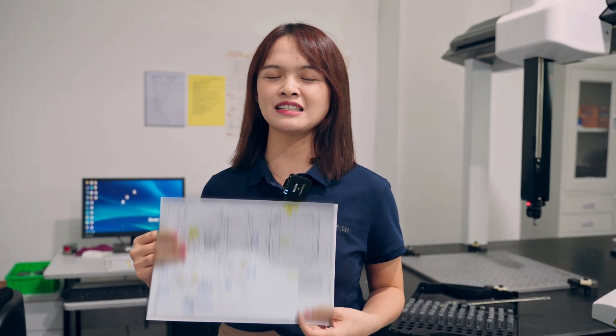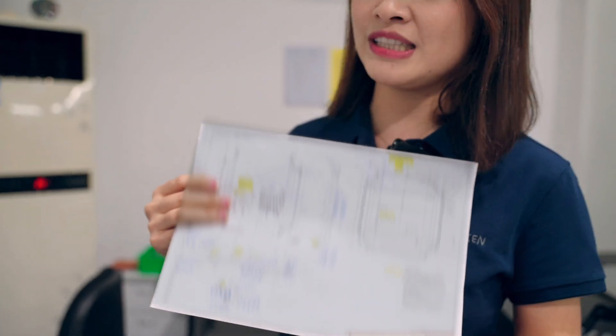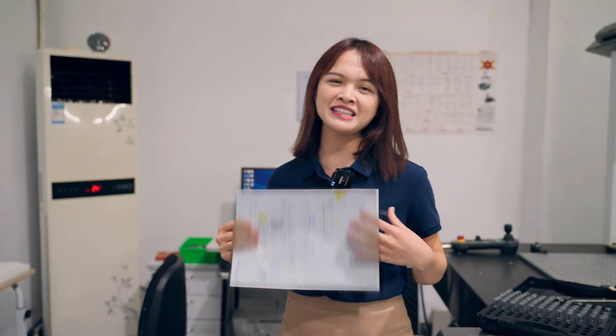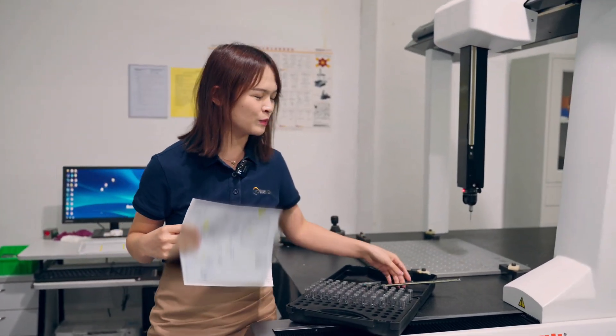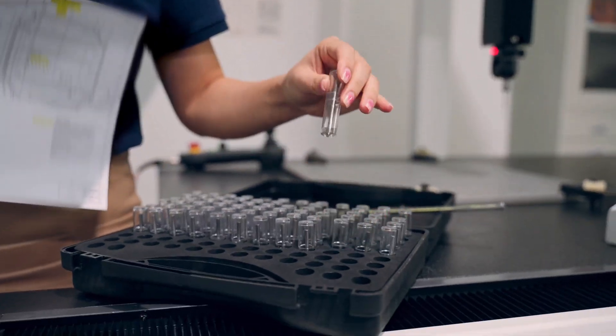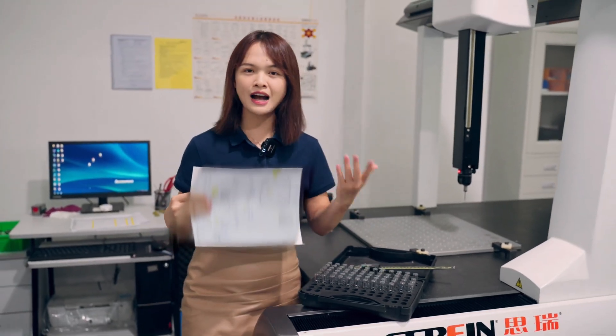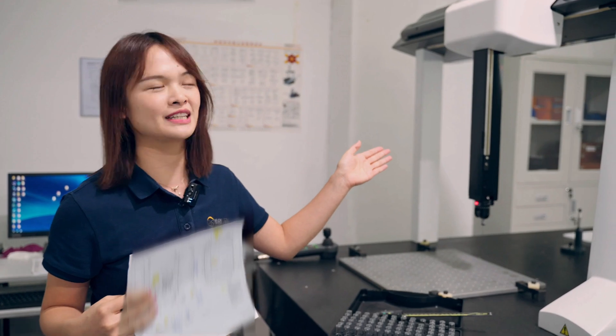When the order is confirmed, our customer will send us a 2D drawing specifying all of the dimensions and some GD&T. For simple linear dimensions, we can inspect them with the caliper or some pin gauges like this. But for other complicated tolerancing, we have to use our CMM machine like this.